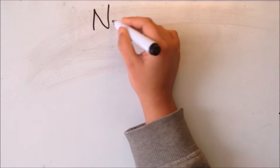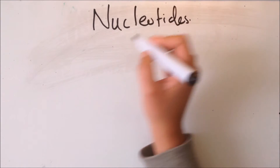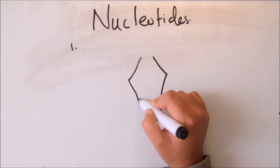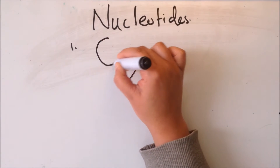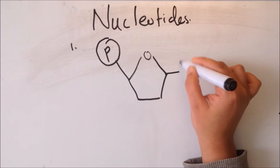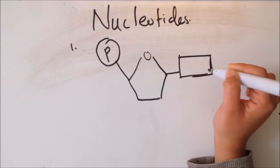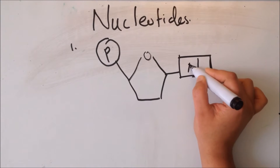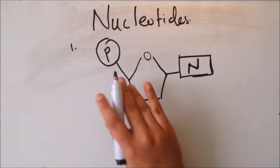Nucleotides contain three components in common: they have a pentose sugar, a phosphate group, and a nitrogenous base. The nitrogenous base includes things like adenine, thymine, guanine, and cytosine. I'll label these as 'N' to indicate the nitrogenous base.